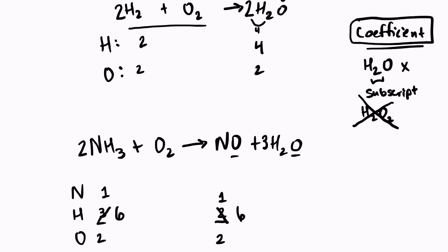Unfortunately, that does change some other things. Now I have 2 nitrogens on the left-hand side and 4 total oxygens on the right-hand side. So let's fix our nitrogen — we can put a 2 here. Now I have 5 total oxygens on the right-hand side, and I only have 2 on the left-hand side.